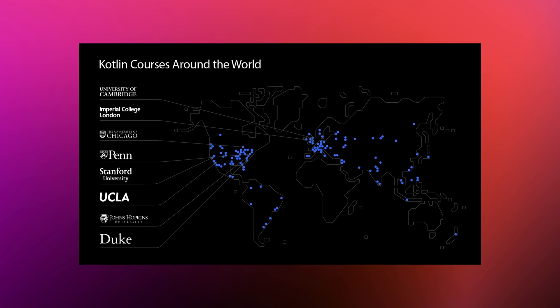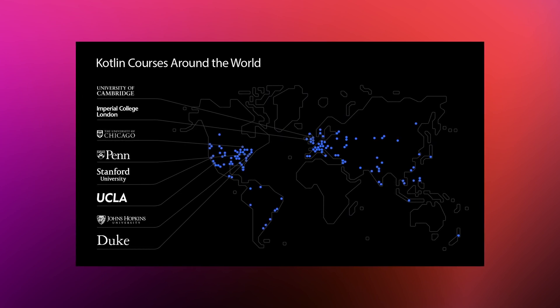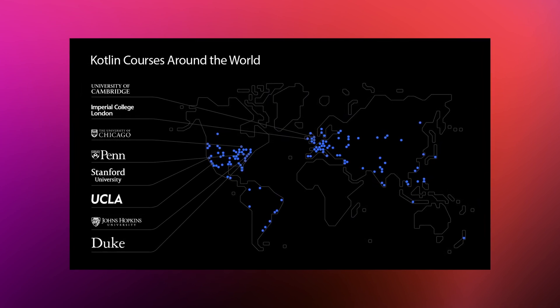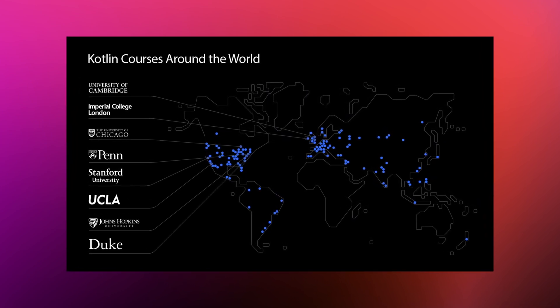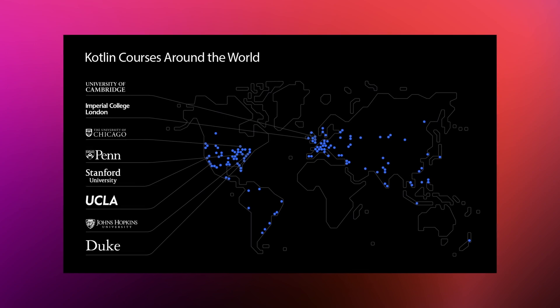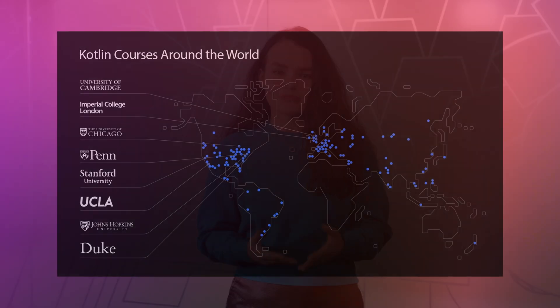All these benefits have made Kotlin an established language in academia — it's already taught at 25 of the top 100 universities in the world. We know of at least 200 universities teaching Kotlin as a first language, for Android development, multi-platform mobile, server-side, web front-end, data science, cloud development, and more.